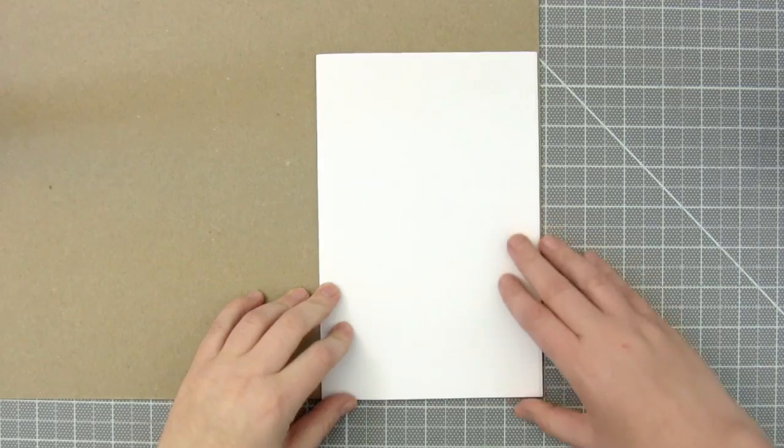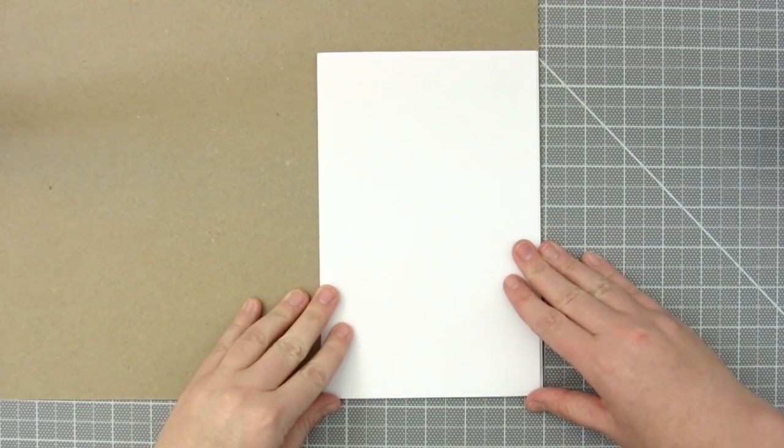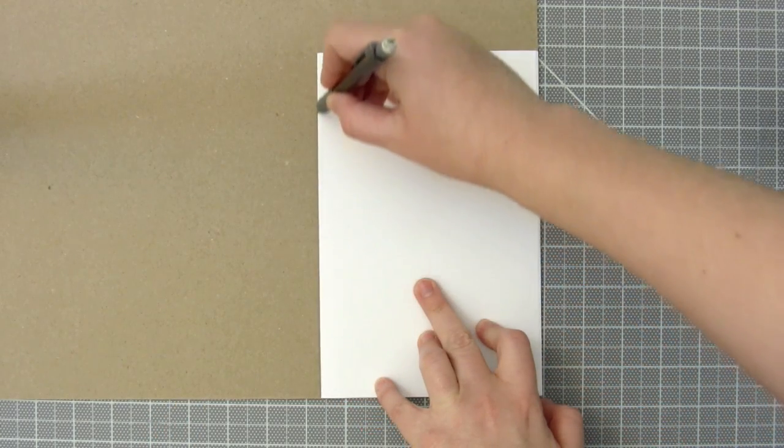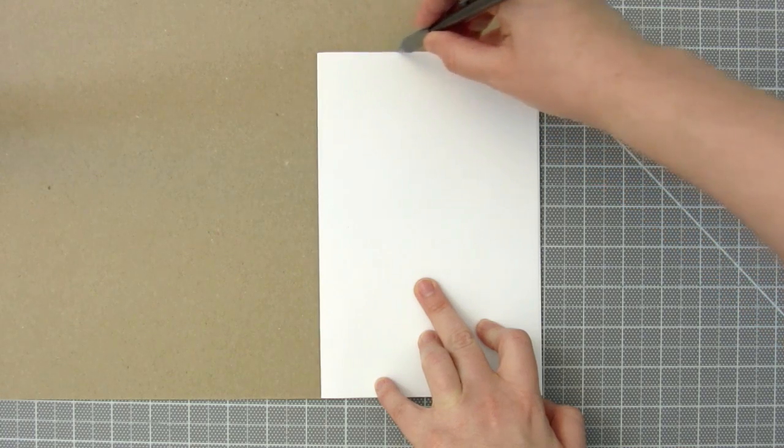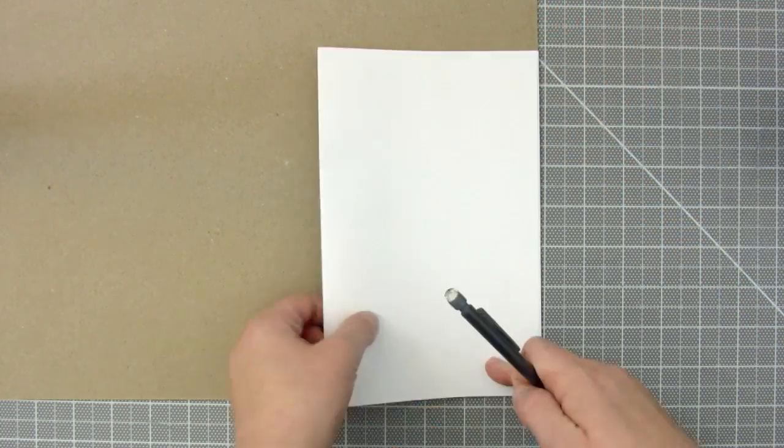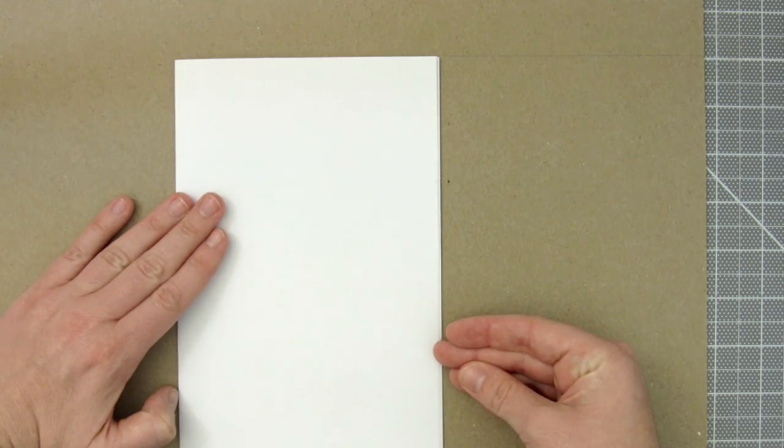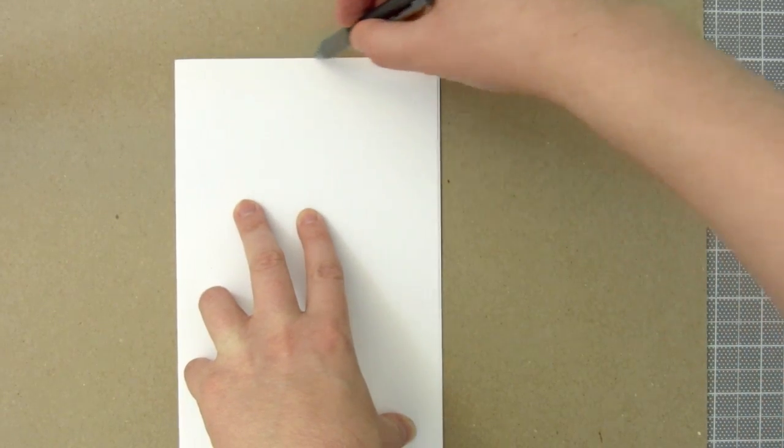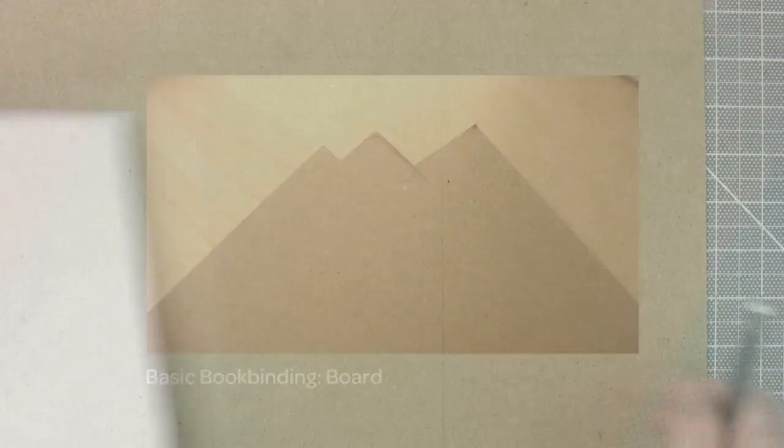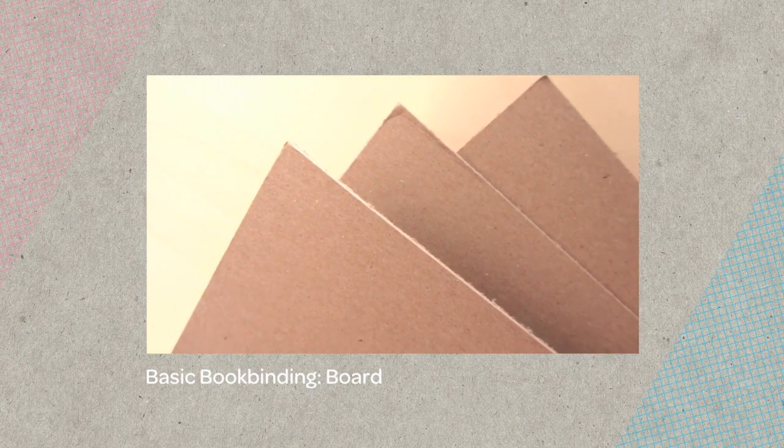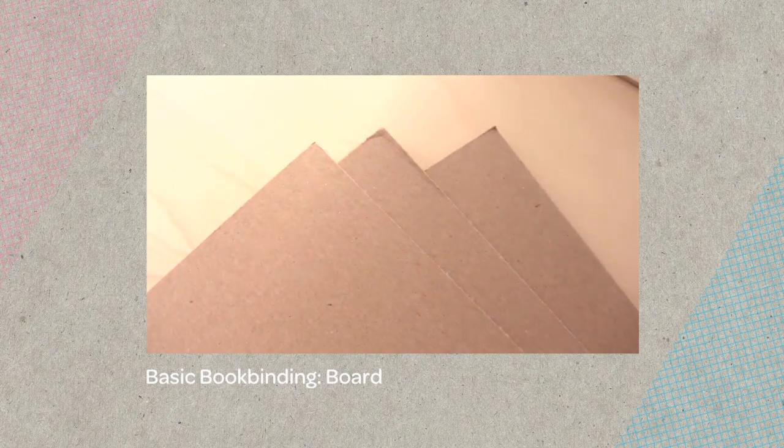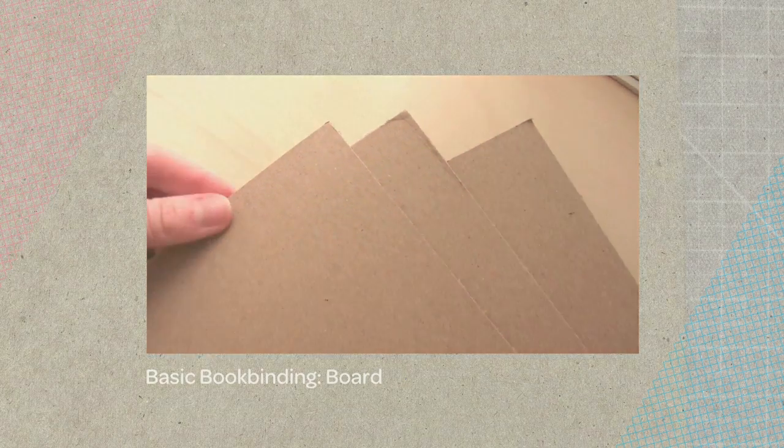Then I'm going to take one signature and trace it on my board, using it as a template to make the covers. For more about the board you can use for the covers, check out my video here. I'll also include the link in the description below. Now cut the boards out with the utility blade.